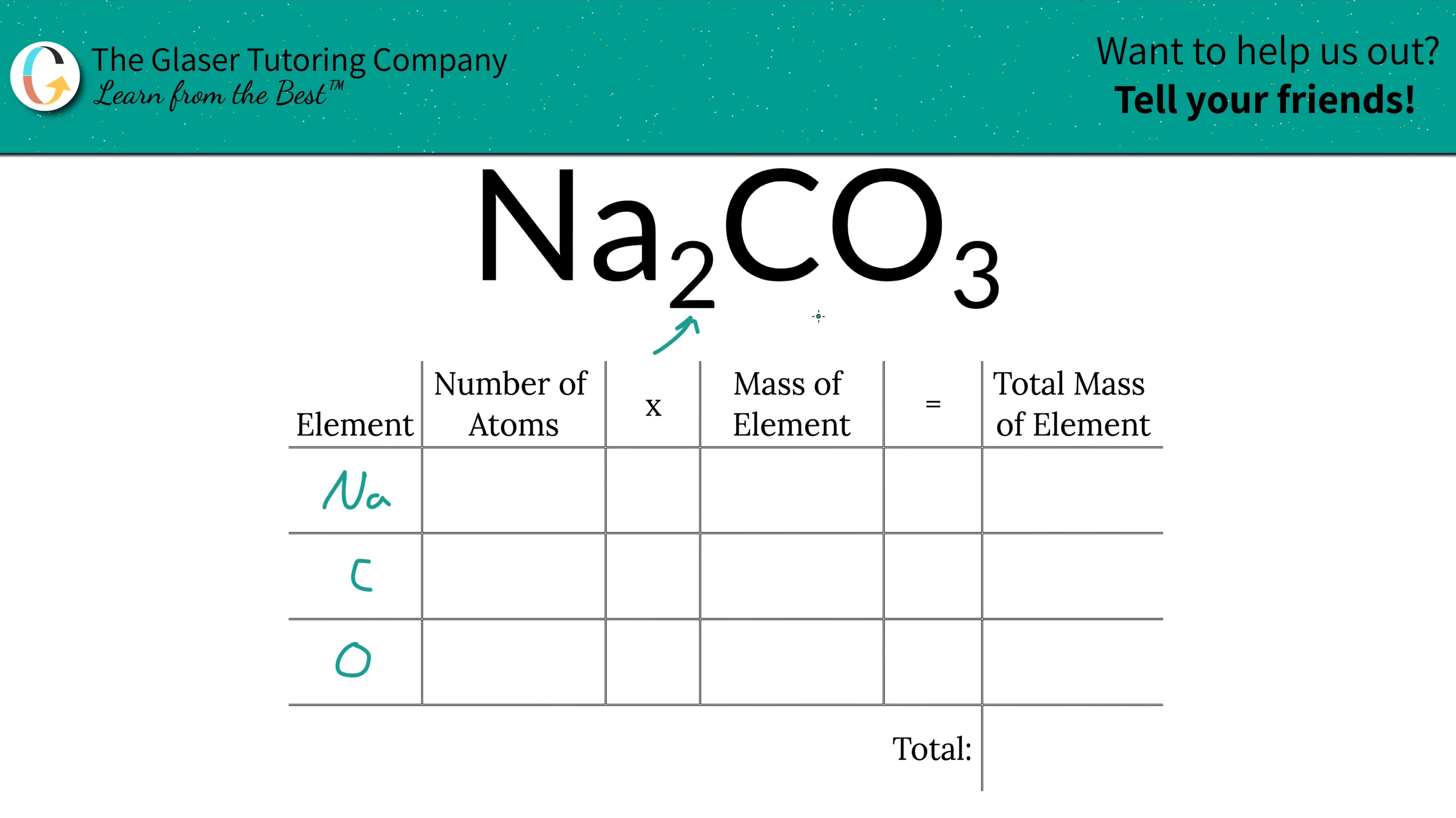Then the next step is to write down the number of atoms, and that's where the subscripts come into play. Now, if you don't see a subscript, put in a one. That's what it is assumed to be. So we got two sodium, one carbon, and three oxygen.